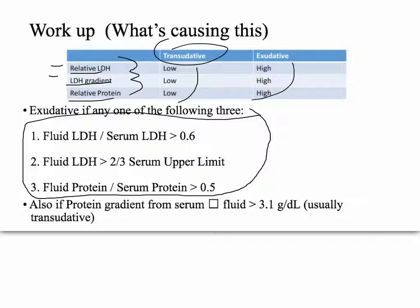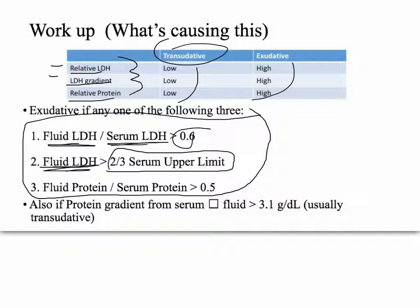If the LDH value in the serous fluid divided by LDH in the serum is greater than 0.6, that indicates exudative — it didn't get filtered well. If the fluid LDH is greater than two-thirds of the upper limit LDH for the serum, you can call it exudative even without comparing to a simultaneous blood draw. You can also do a fluid protein divided by serum protein — if that ratio is greater than 0.5, it's exudative.